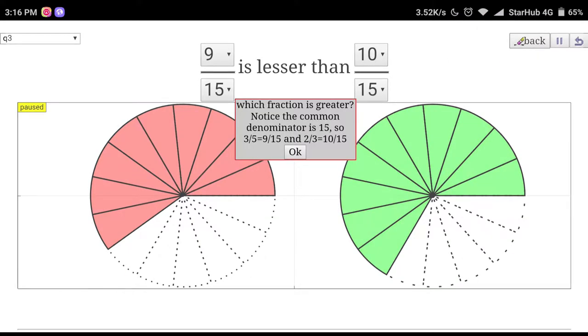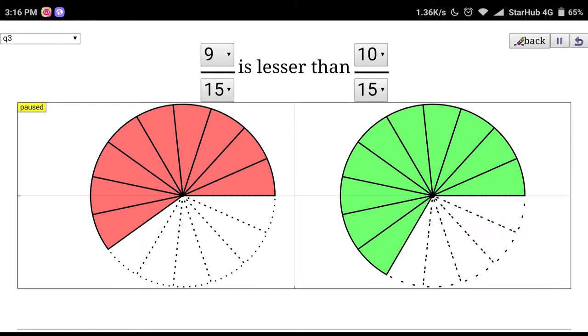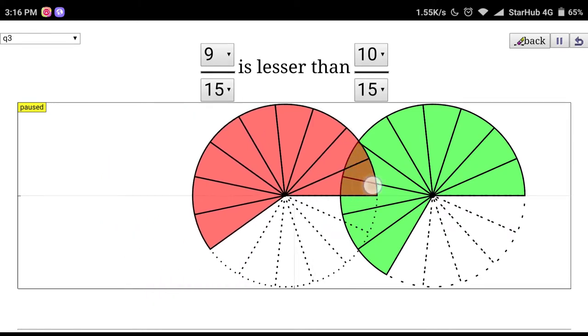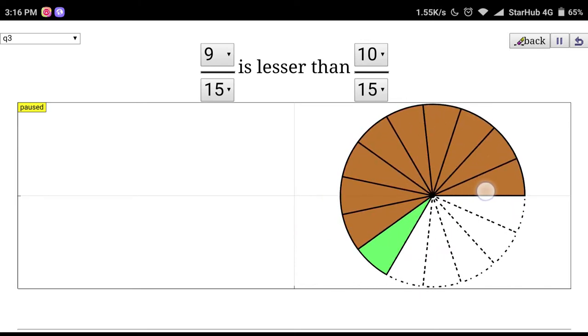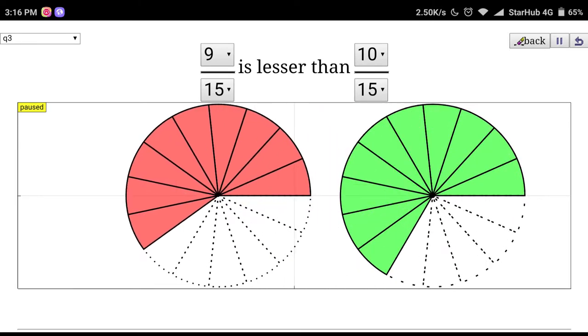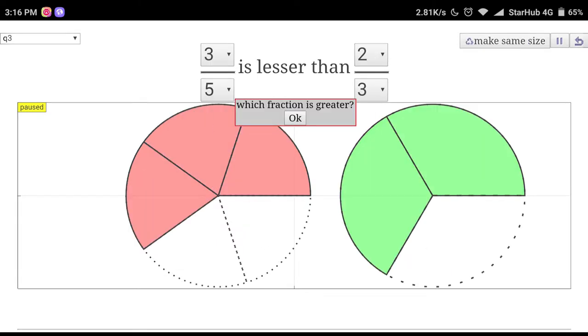It will subdivide into the common denominator to allow the students to then compare that this has 9 pieces, whereas the other one has 10. Therefore, 10 pieces is larger. You can click back and it will show the original fraction.